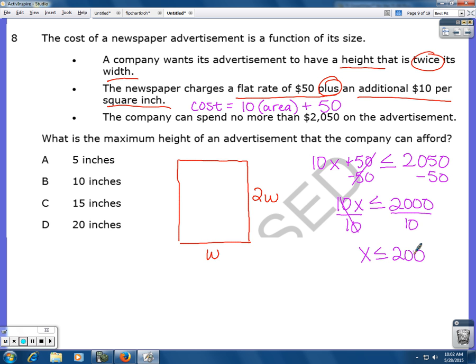So that means that the area has to be less than or equal to 200 square units in order for them to spend $2,050 or less. So that's the biggest the area can be.